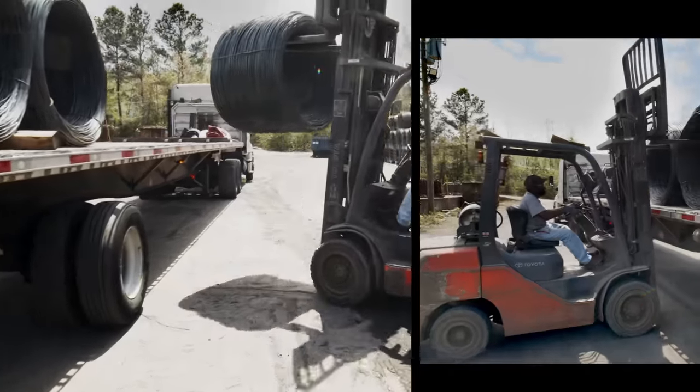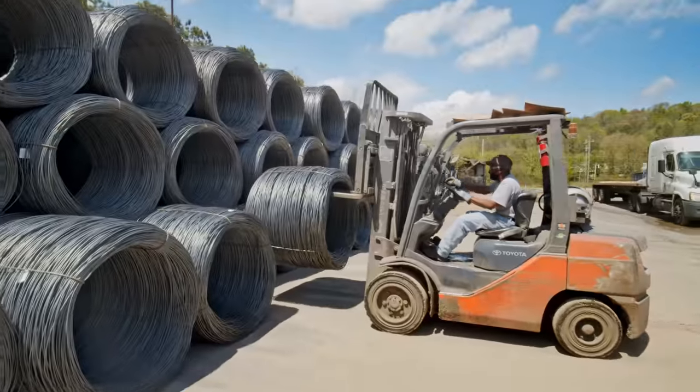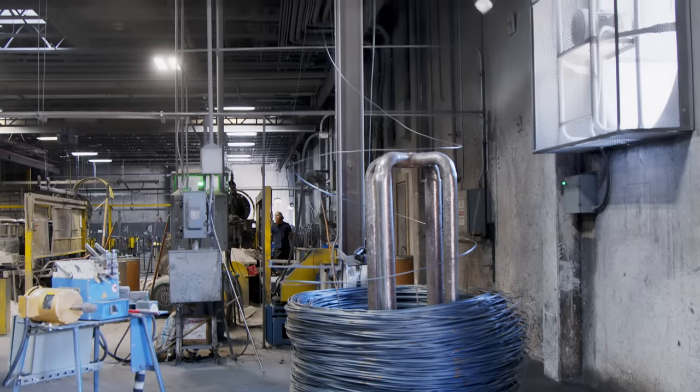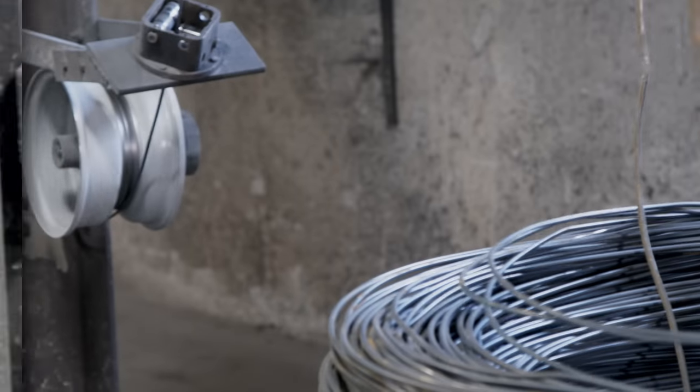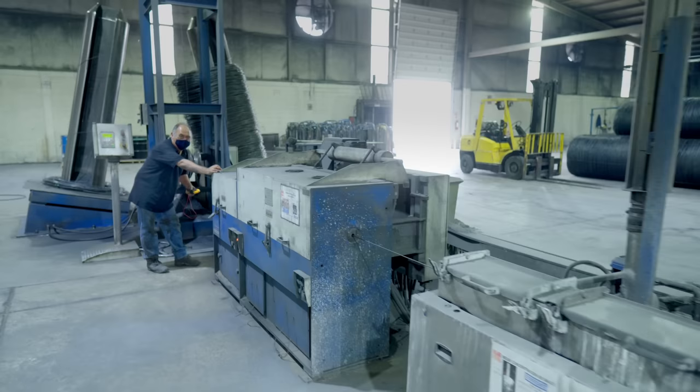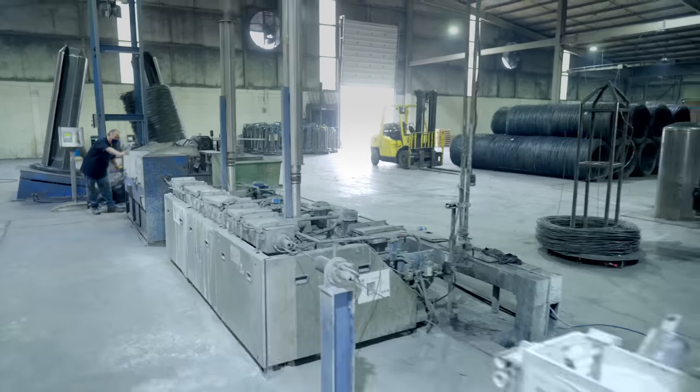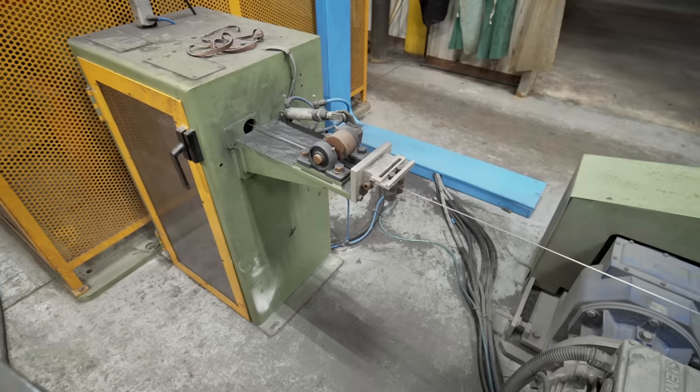Our wire garment hangers begin as large coils of wire rods about a quarter inch in diameter and between 3,000 to 5,000 pounds each. Then we stretch them until they thin to around the gauge we need.